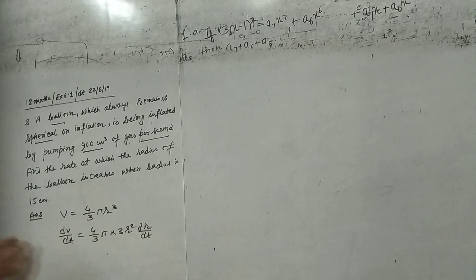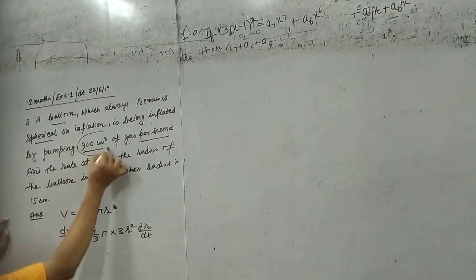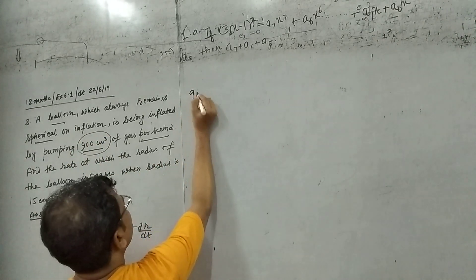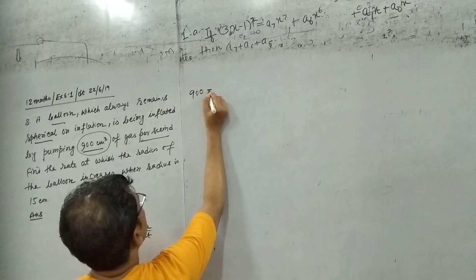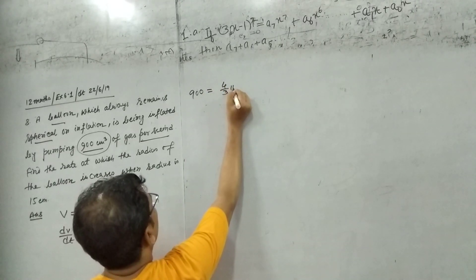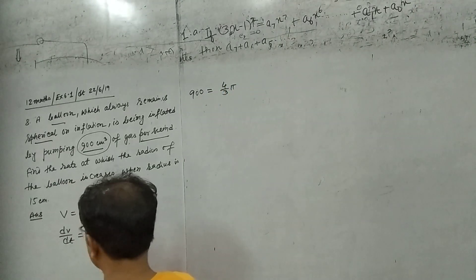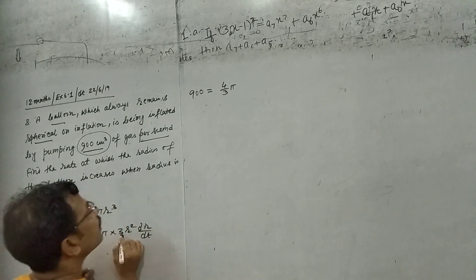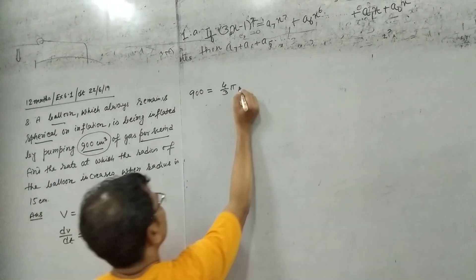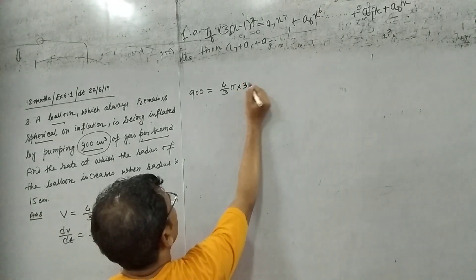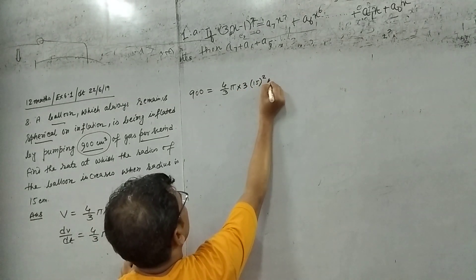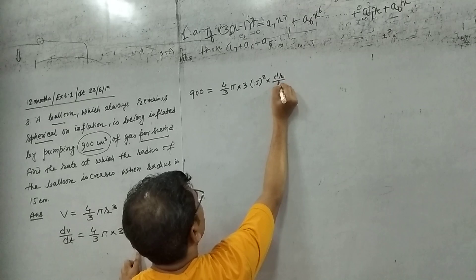dV upon dt equals to 900 centimeter cube per second. So 900 centimeter cube per second equals 4 by 3 pi R, 4 by 3 pi. So 3, 3 cancel first. 3 into 15 square into dr upon dt.